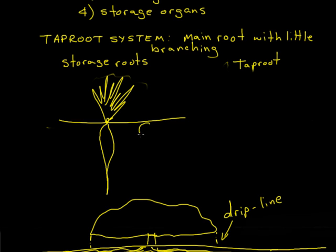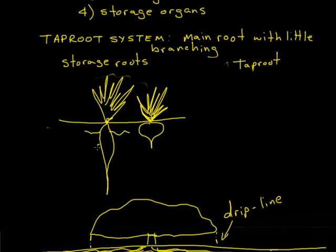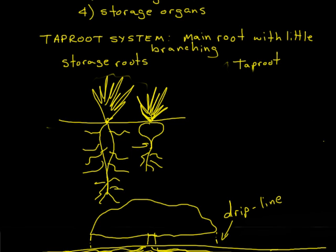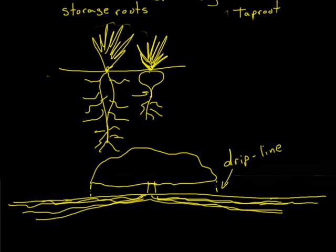A carrot, or a turnip for that matter, which is also a storage type tap root — when we see them at a farmer's market or in the grocery store, we don't see a bunch of small feeder roots. But if you look closely, you can see where those roots had been emerging while in the soil. In the case of both turnips and carrots, they don't typically grow deeper than a couple of feet.